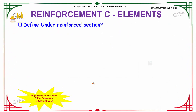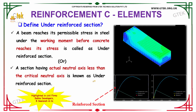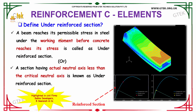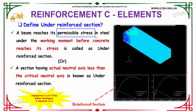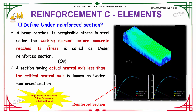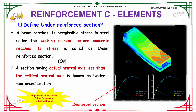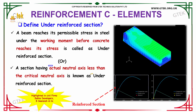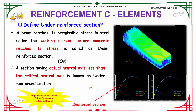Our next question is: define under-reinforced section. If a beam reaches its permissible stress in steel under working moment before concrete reaches its permissible stress, it is called an under-reinforced section. The section having an actual neutral axis less than the critical neutral axis is known as an under-reinforced section.